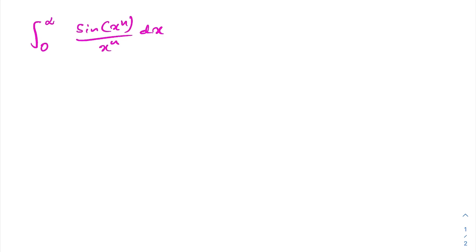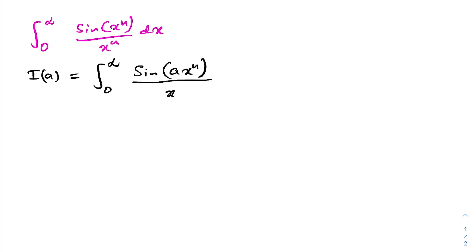First, I'm going to define a parametric integral: I(a) is equal to the integral from 0 to infinity of sine of (ax)^n over x^n dx. Our original integral I is equal to I(1).